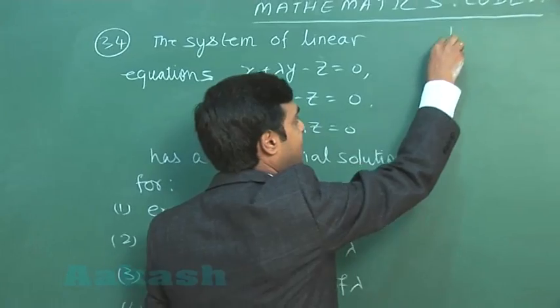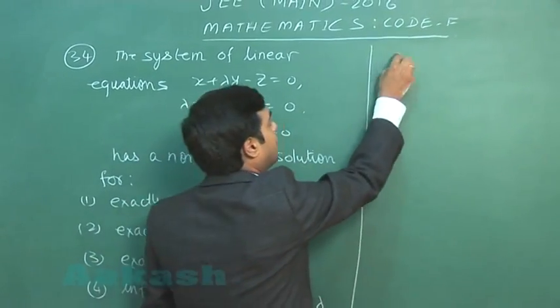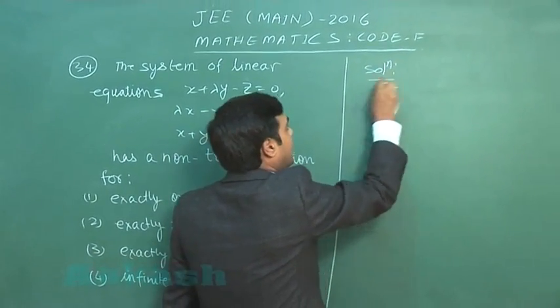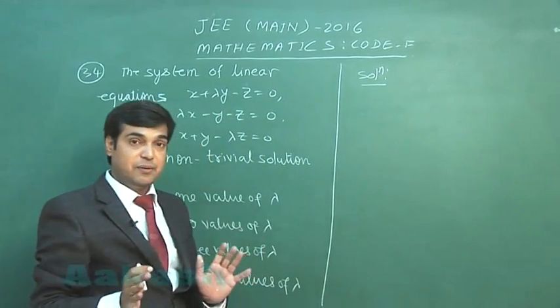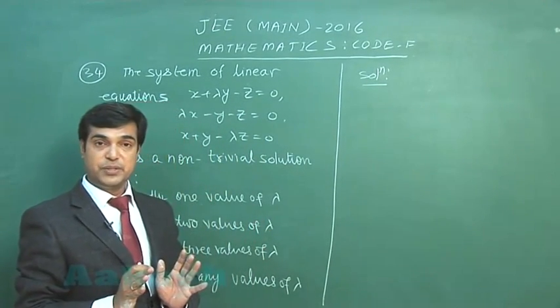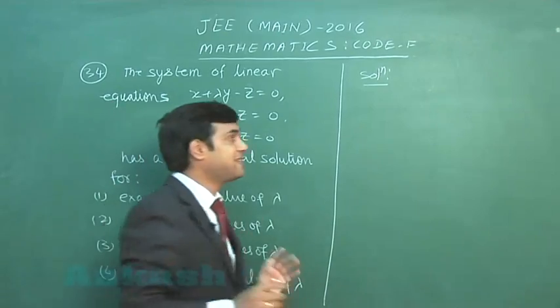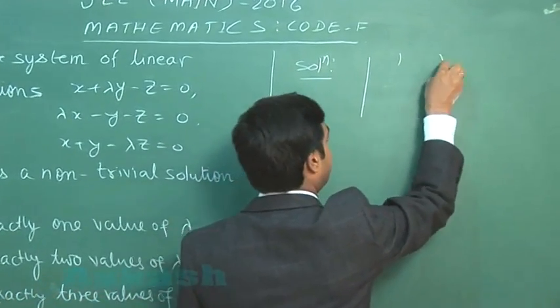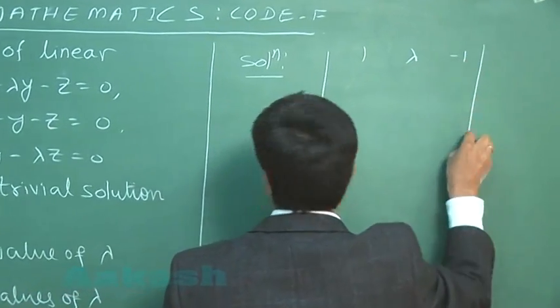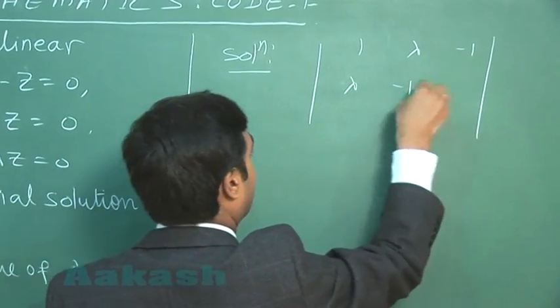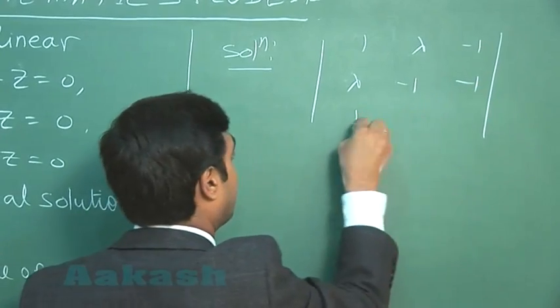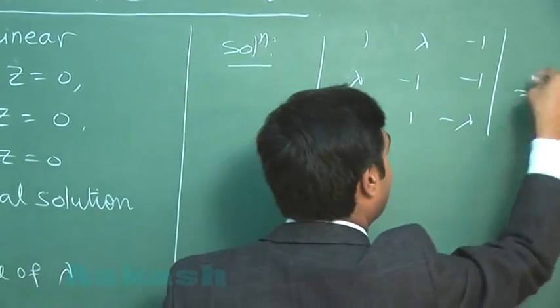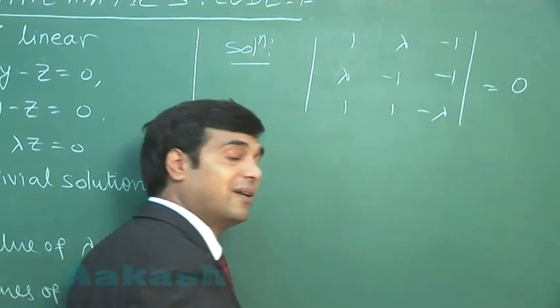So, let us start it. Now, the system of equations which is homogeneous has non-trivial solution. Simple thing, we simply say the determinant formed by the coefficients must be 0. This is clear.